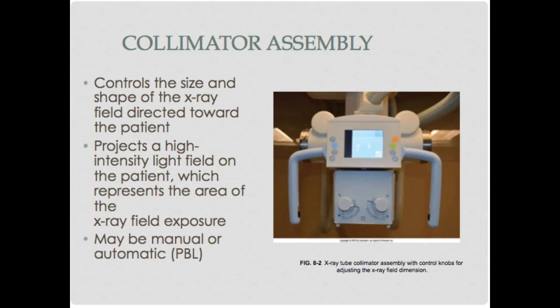The collimator assembly controls the size and shape of the x-ray field directed toward the patient. It projects a high-intensity light field on the patient representing the area of the field. When you adjust your collimator, it has a light, a mirror, and lead shutters. The lead shutters block the light just as they do with x-rays. Wherever your light is represented is where your x-ray field should be, though some may be off slightly — you need to know how much and which direction to avoid clipping pertinent anatomy.